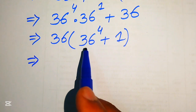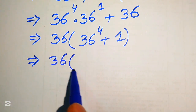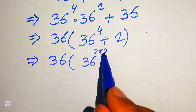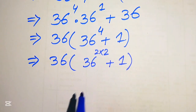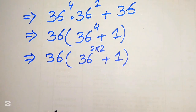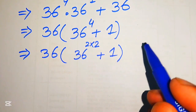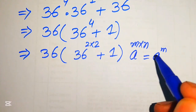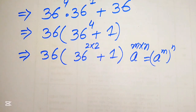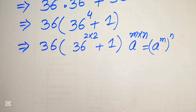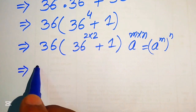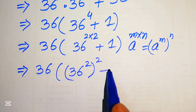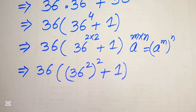In the next step we rewrite 36^4 as 36^(2×2), then apply the exponent law a^(m×n) = (a^m)^n. So 36^4 becomes (36^2)^2. Our expression is now 36 × ((36^2)^2 + 1). Our first target is to find the value of 36 squared.